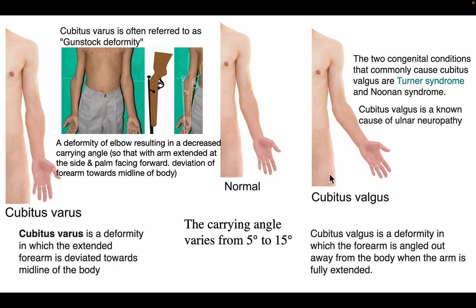Cubitus valgus is a deformity in which the forearm is angled out away from the body when the arm is fully extended. The two congenital conditions that commonly cause cubitus valgus are Turner syndrome and Noonan syndrome. Cubitus valgus is also a known cause of ulnar neuropathy.